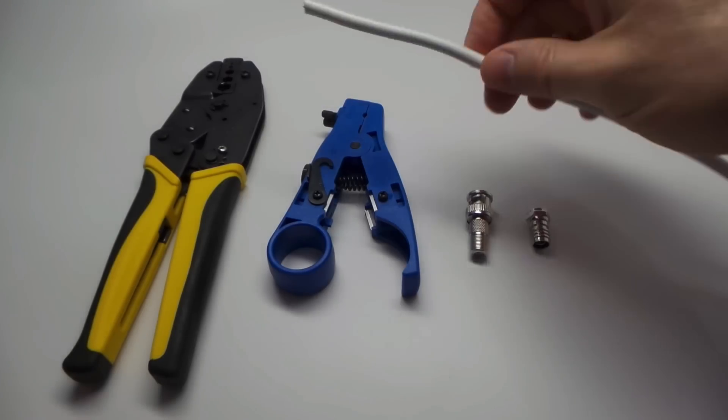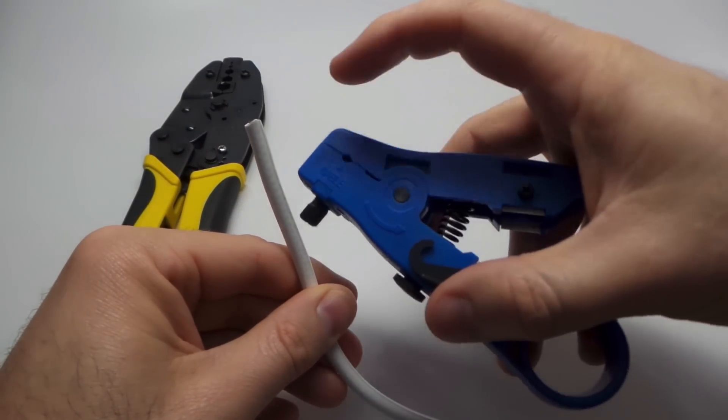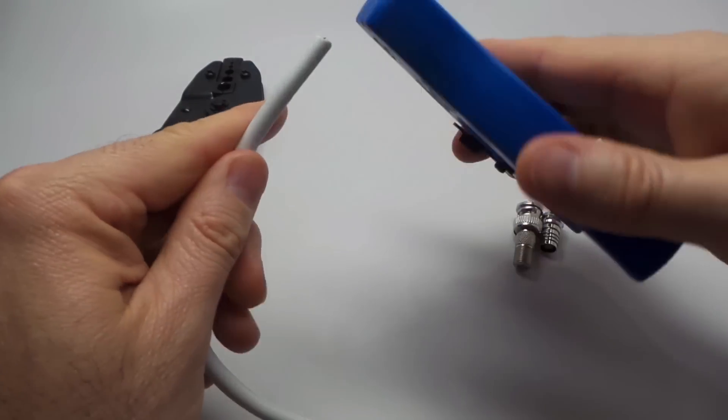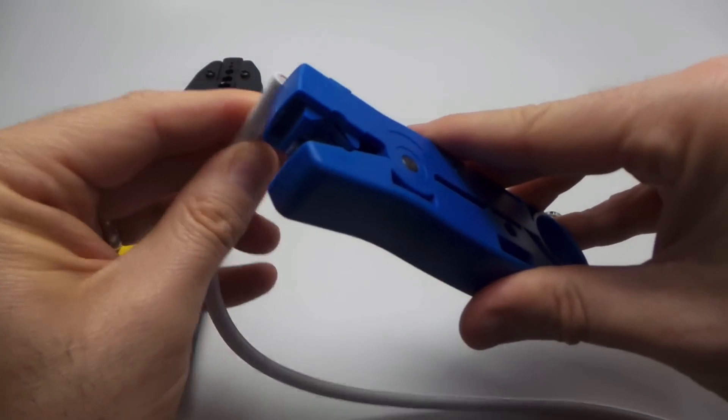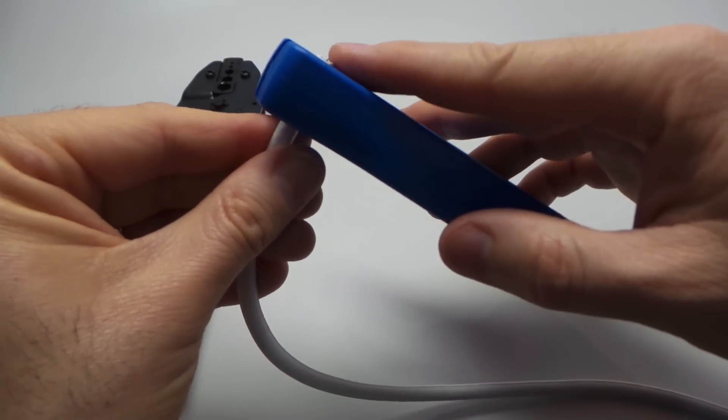So the first thing I'm going to do is grab my RG-59 cable, and I'm going to use a TL-22 cable stripper and insert it in the side labeled cable. You want to insert it to the exact length of the tool, so that's about flush right there.